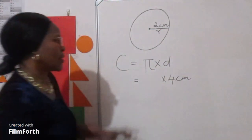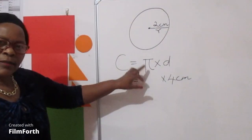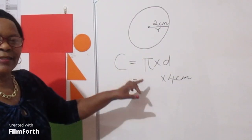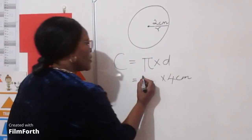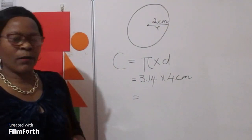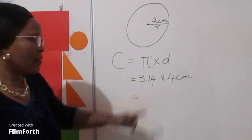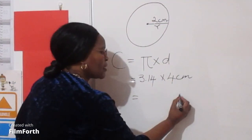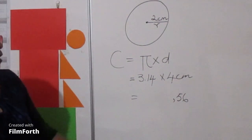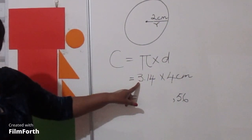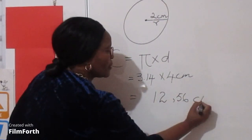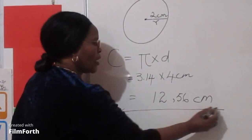Multiply by pi. Let's replace pi by its value, that is 3.14. So we have 3.14 multiplied by 4. Let's multiply now: 4 multiplied by 14 is 56 — note the decimal comma. 4 multiplied by 3 gives us 12. Therefore C is 12.56 centimeters.